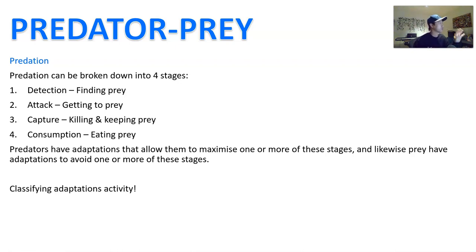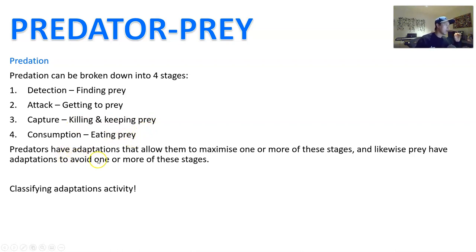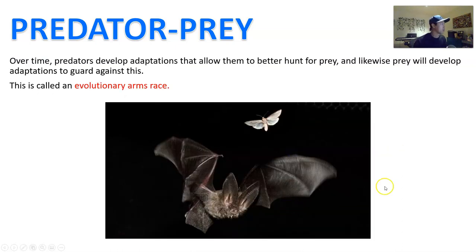You can think of predation in four stages: detection — where you have to find it; attack — where you have to get to it; capture and kill — keeping it there with you; and then eating it. Predators can have adaptations that allow them to maximize one or more of these stages, and likewise, the prey also have adaptations to avoid one or more of these stages. Over time, predators develop those adaptations and get really good at hunting, but then prey develop adaptations that guard against this.